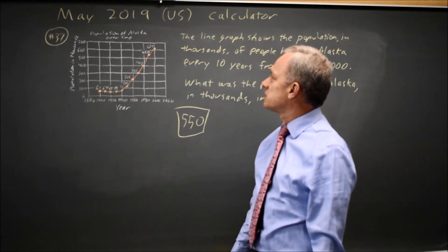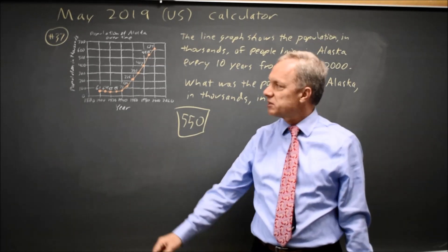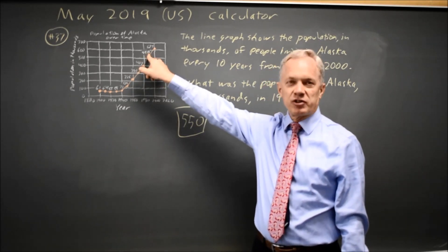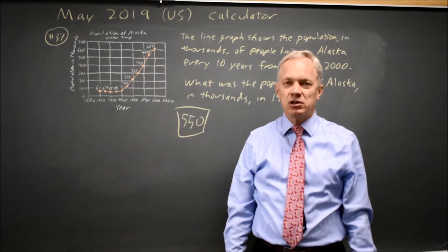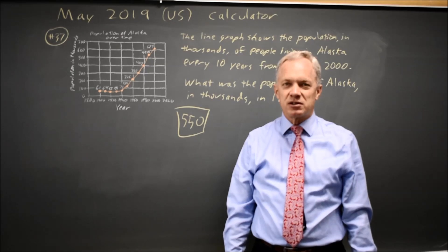So whether this is a population of people or a population of bacteria in a culture dish, you're going to read the 550 off the graph. They're just asking you to read the graph. Come back soon for my next video. With math, there's always more.